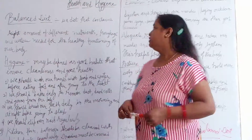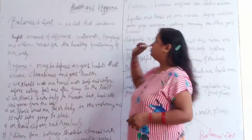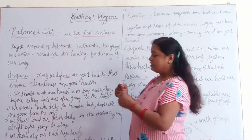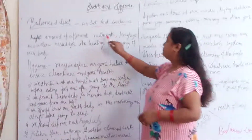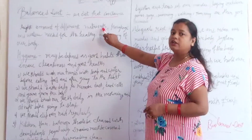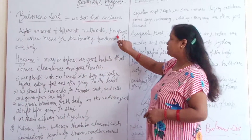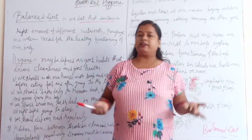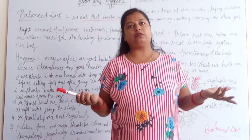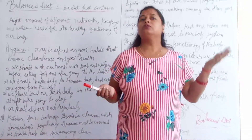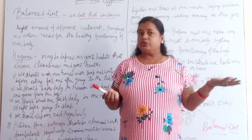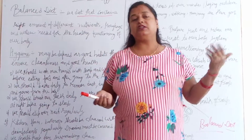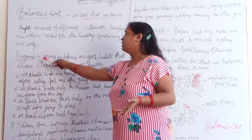Today's topic is balanced diet. A balanced diet is a diet that contains the right amount of different nutrients — like proteins, carbohydrates, vitamins, minerals, roughage, and water — needed for the healthy functioning of our body. We require energy, and without energy we can't do any kind of work. We get energy from food, and we have to eat nutritious food like proteins, carbohydrates, fats, and minerals.